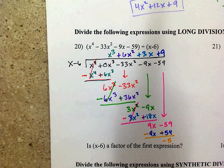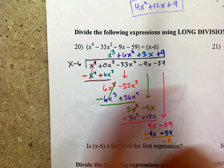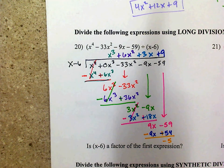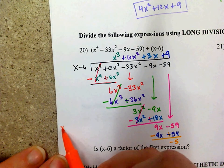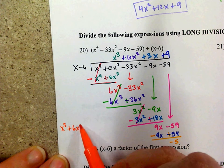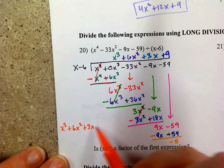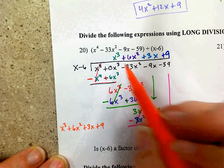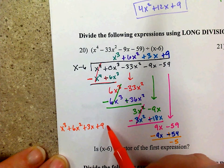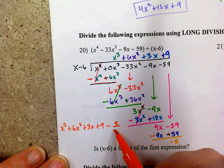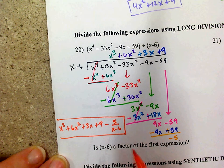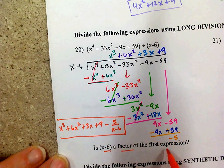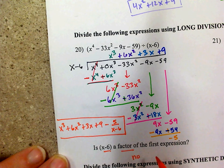The actual solution: you have to write down the answer. The answer is x cubed plus 6x squared plus 3x plus 9. My remainder is negative 5, so I write minus 5 divided by what I divided by — and that is your full answer. Now, is this a factor of the first expression? The fact that we had a remainder means no — the remainder was not equal to 0.